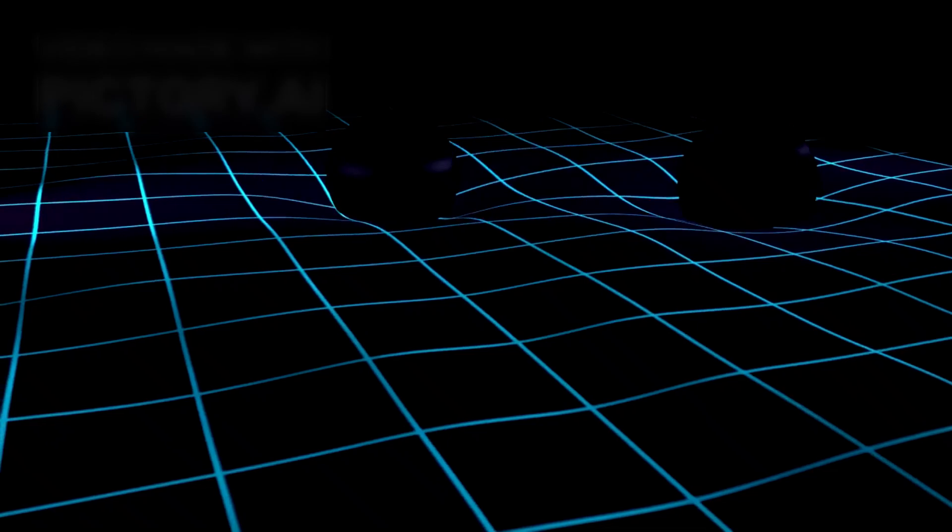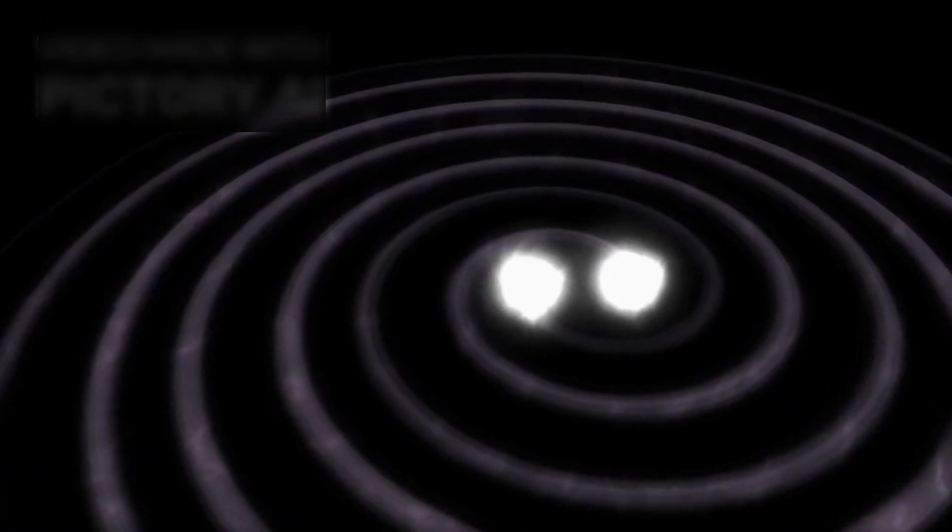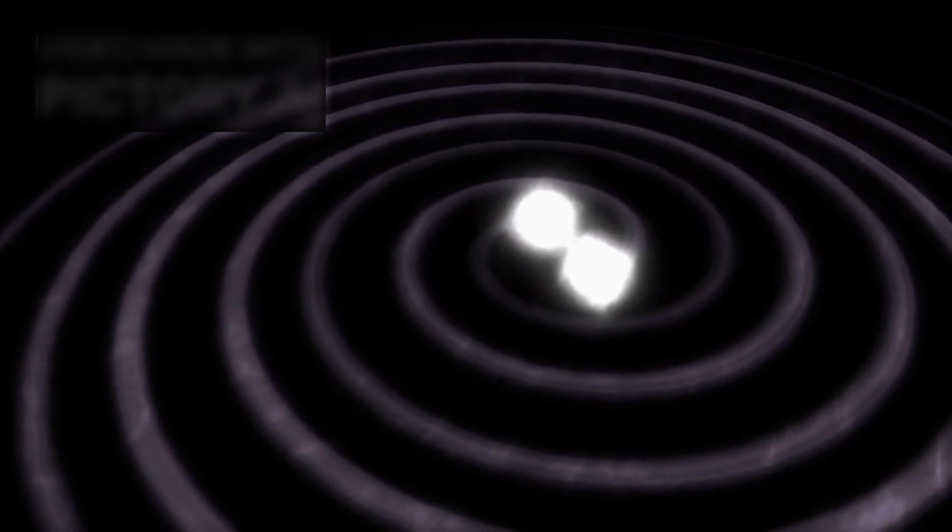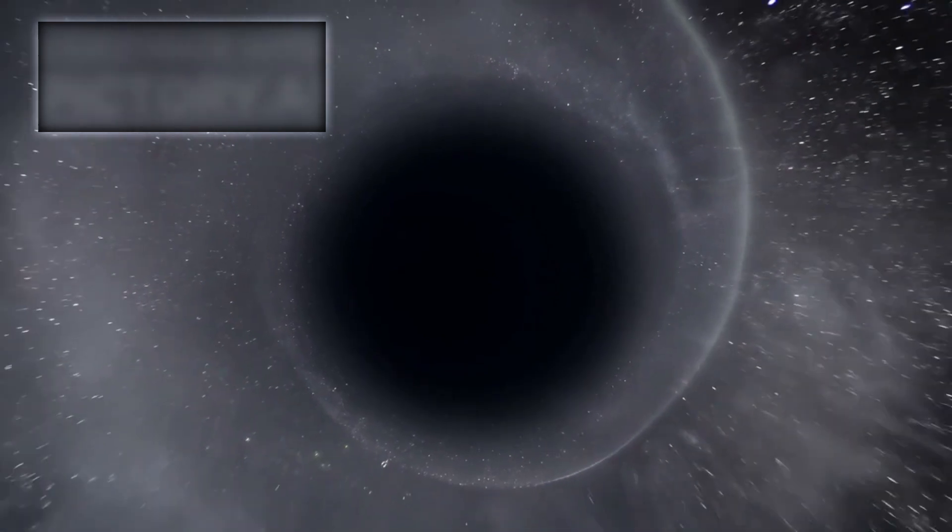Still, black holes are not just abstract ideas, they are active participants in the drama of the universe. Since 2015, detectors like LIGO and Virgo have been capturing the faint tremors of spacetime caused by black hole mergers. These gravitational waves, ripples in the fabric of the universe, allow scientists to listen to cosmic collisions and study black holes in an entirely new way. Each signal gives us a glimpse into events billions of years old and helps map the population of black holes throughout the universe.